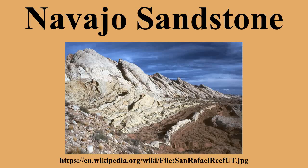Navajo Sandstone often appears as massive rounded domes and bluffs that are generally white in color. Navajo Sandstone frequently occurs as spectacular cliffs, cuestas, domes, and bluffs rising from the desert floor. It can be distinguished from adjacent Jurassic sandstones by its white to light pink color, meter-scaled crossbedding, and distinctive rounded weathering.